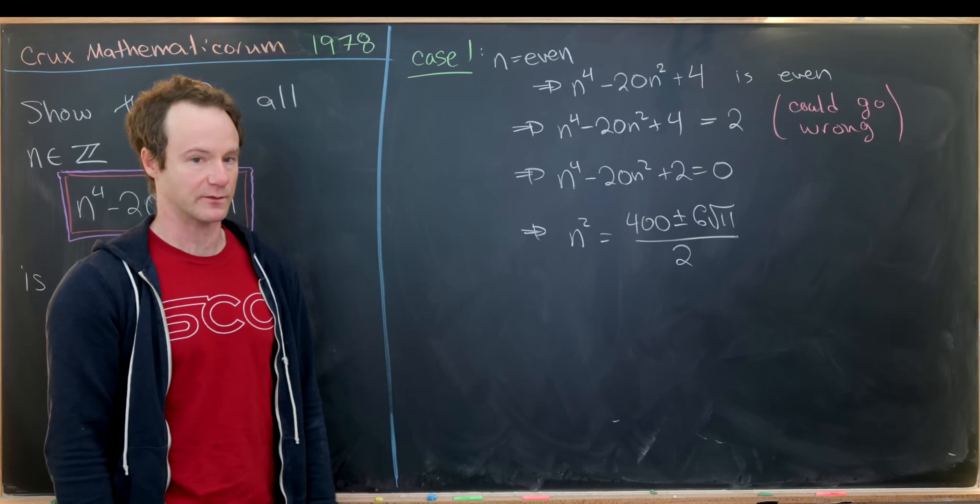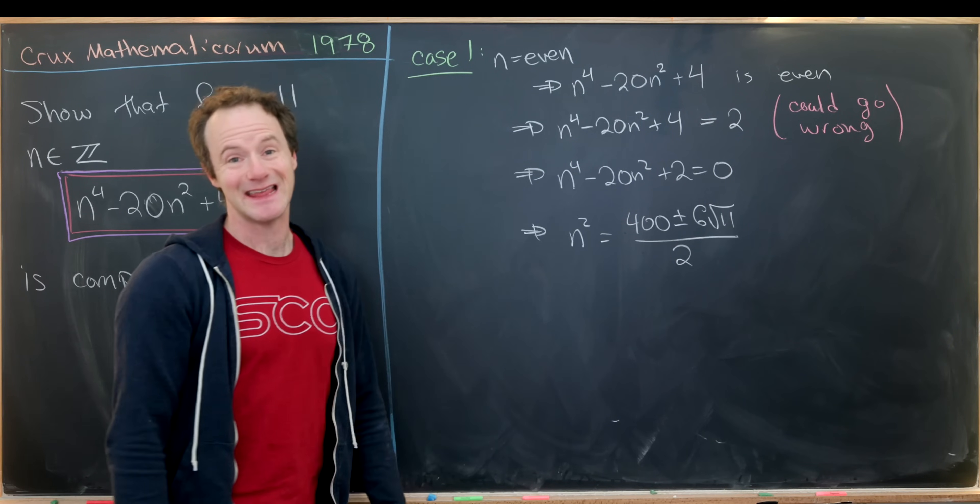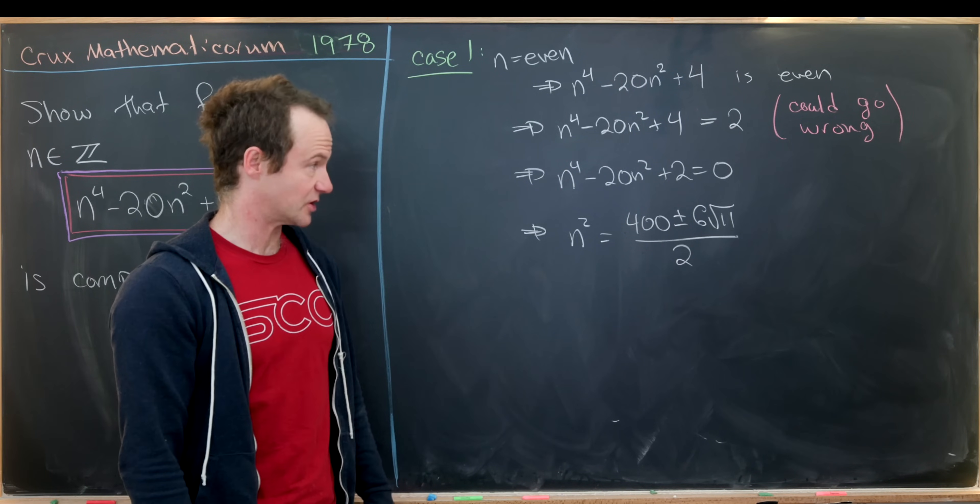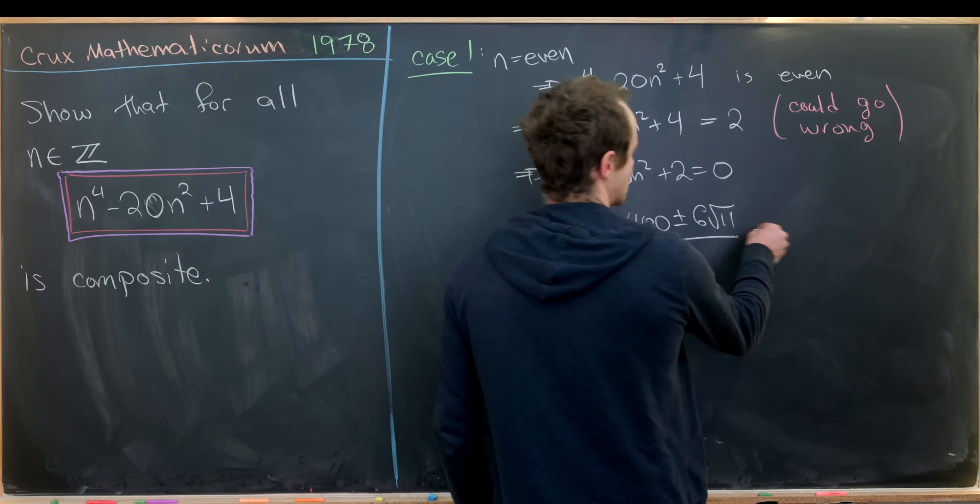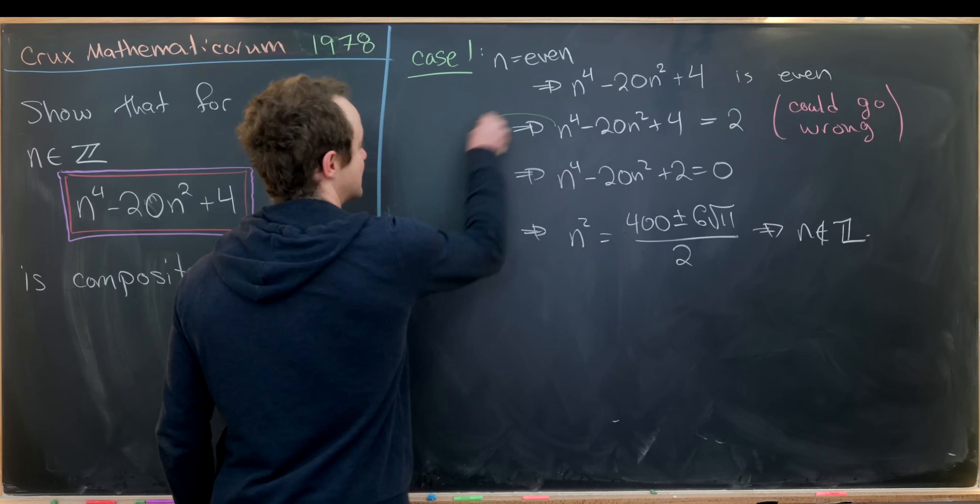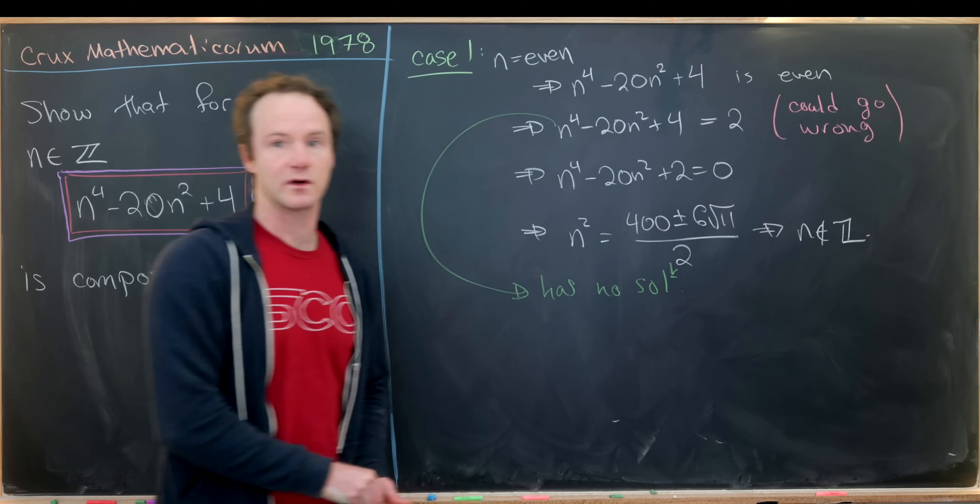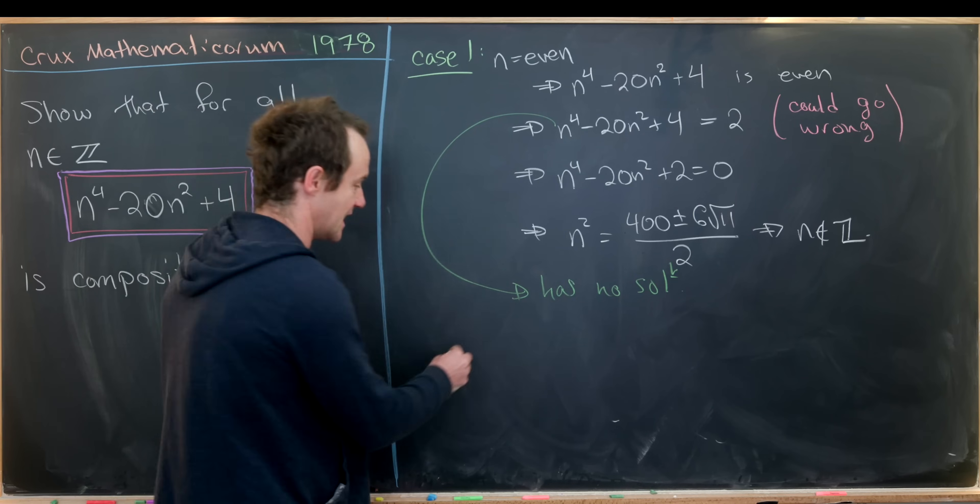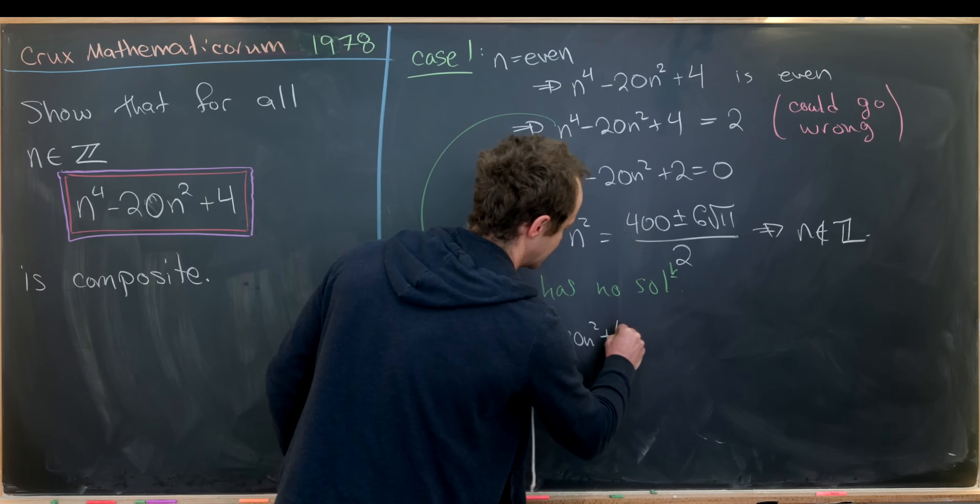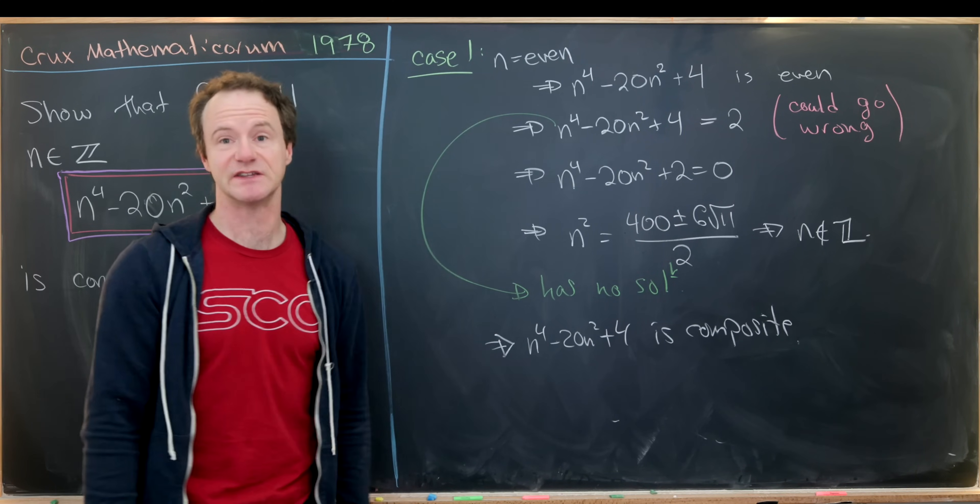But notice if n squared equals this object, then that means n is not an integer. Because if n is an integer, n squared is also an integer, but this is clearly not an integer. So n is not an integer, which tells us that this equation has no solution. In other words, we can never get the even prime out of this case, which means if n is even, our object n to the fourth minus 20n squared plus 4 is composite. That's sufficient for the first case.